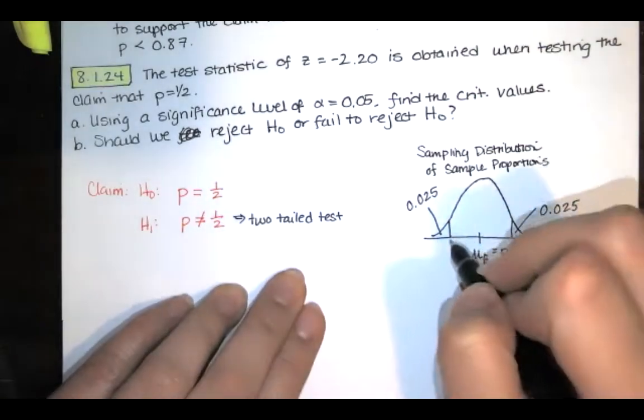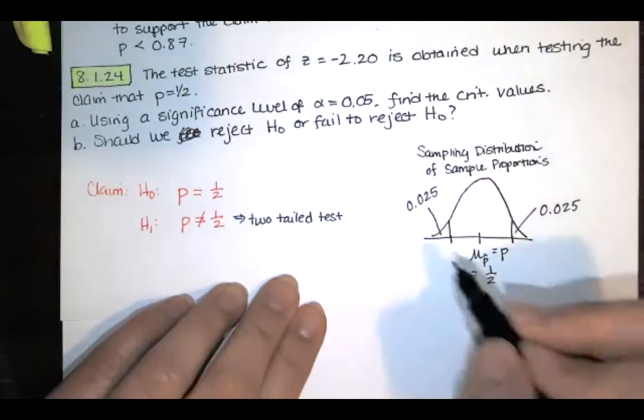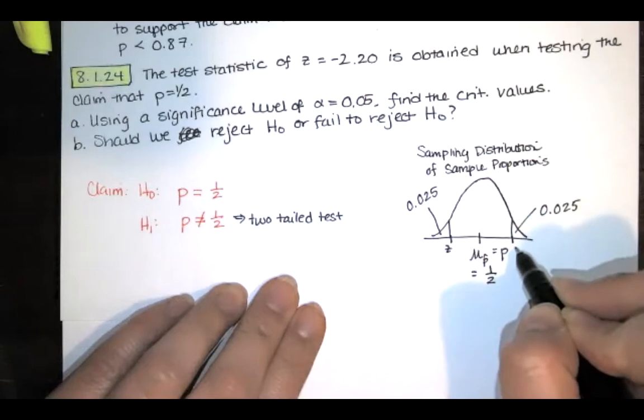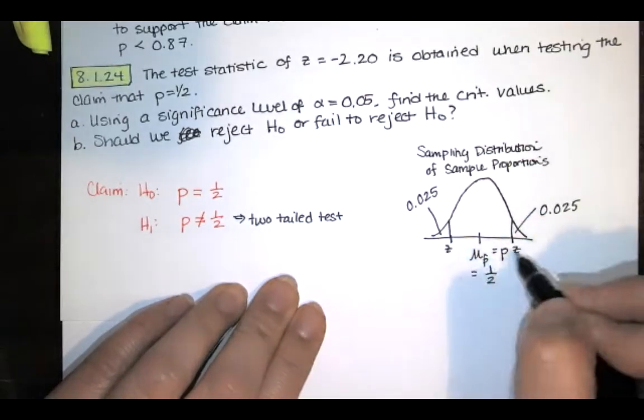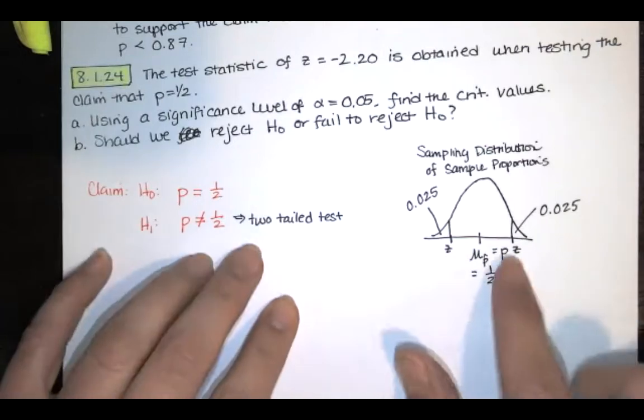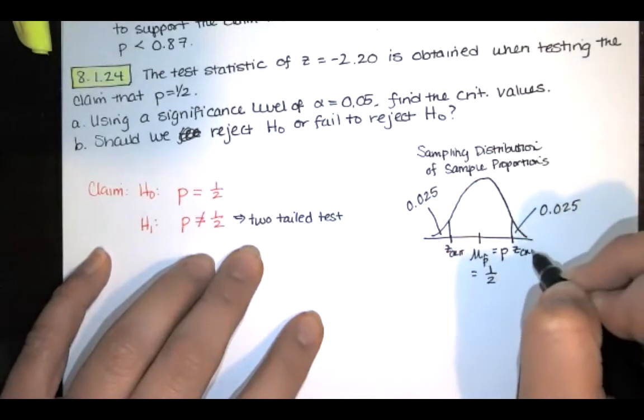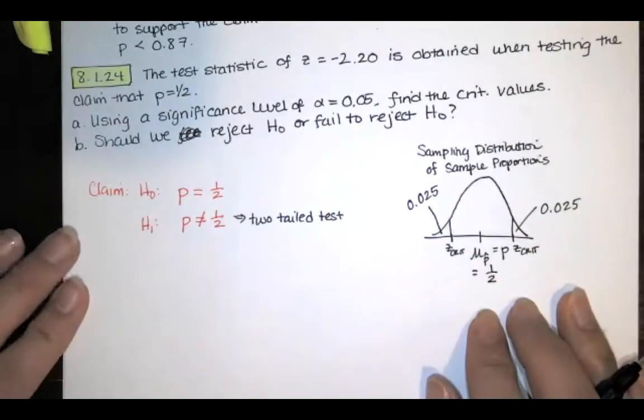And the question is, what are the critical values? Well, we're going to get two values. We're going to get this z-score and the opposite of it over here. You're going to have a negative version and a positive version because of the symmetry there. And the question is, what are those values?